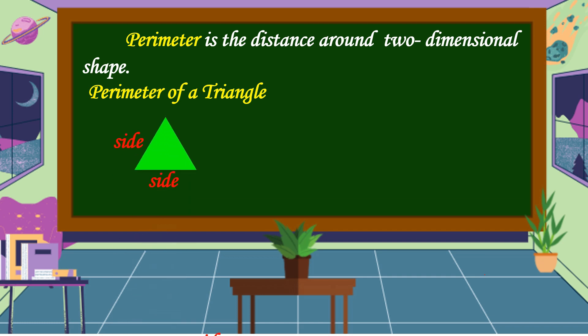Let's discuss how to find the perimeter of a triangle. This is a triangle with three sides. What do we call a triangle having three equal sides? We call it an equilateral triangle. The formula for finding the perimeter of an equilateral triangle is P = 3s, or perimeter equals 3 times the side. If it is an isosceles or scalene triangle, we use the formula P = side plus side plus side.